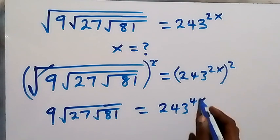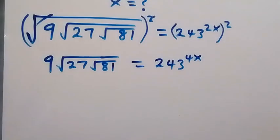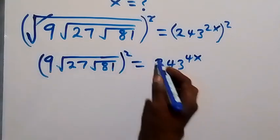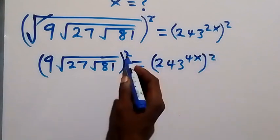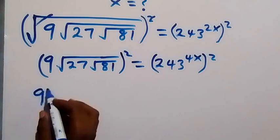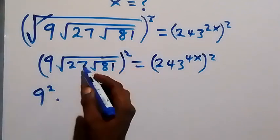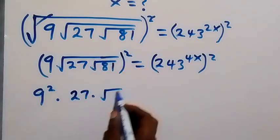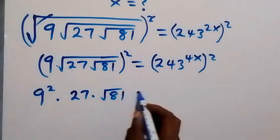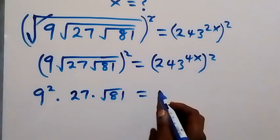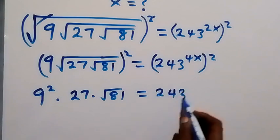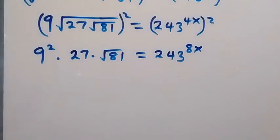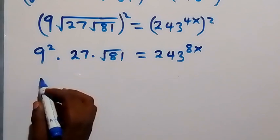In the next step we can square again. When we square both sides again, this square will affect 9, that's 9 squared, then multiplied by — it will affect this square root — so square cancels square root and that's 27 times root 81, which equals this power also multiplied, giving us 243 raised to power 8x.